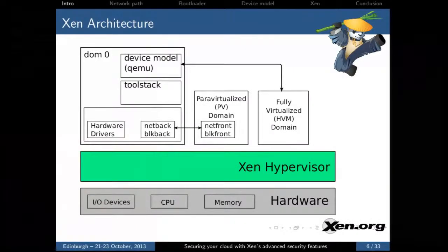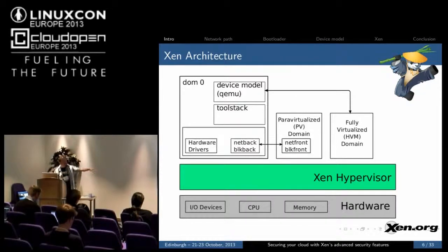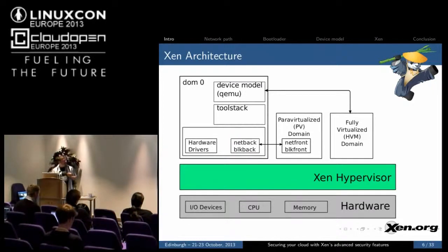So let's start with the Xen architecture. Xen is a type one hypervisor, which means it runs directly on the hardware, not next to or on top of another operating system. It is a micro-kernel style hypervisor, so it only controls the CPU, the memory, and the interrupts. And it offloads the hardware drivers to guest VMs.